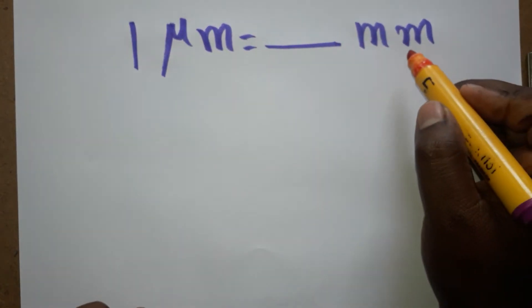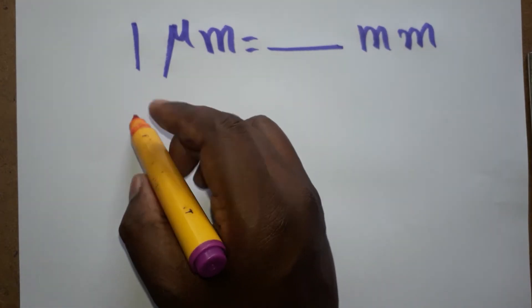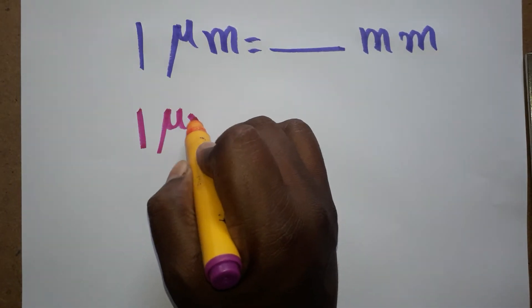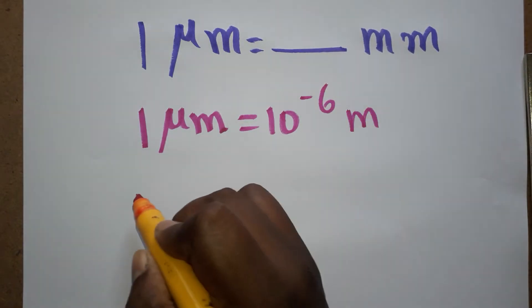Today we are going to learn: 1 micrometer equals how many millimeters? It's a very easy conversion. We already know that micro means 10^-6 meter, and milli...